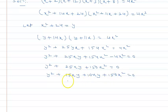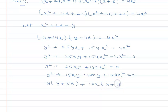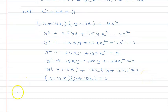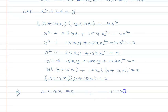So grouping: y(y plus 15x) plus 10x(y plus 15x) equals zero, making (y plus 15x)(y plus 10x) equals zero. So either y plus 15x equals zero or y plus 10x equals zero.